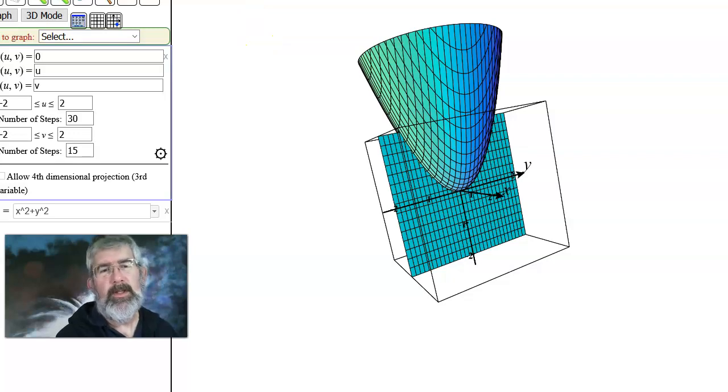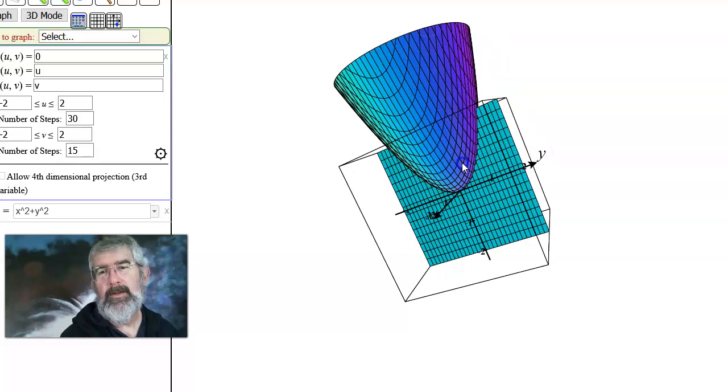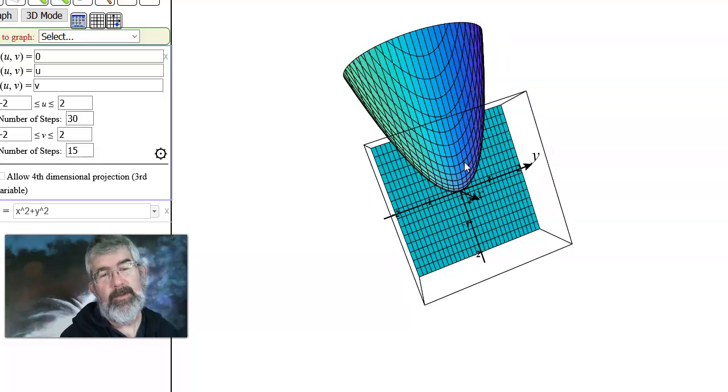Traces. So if you can get an idea what the traces are for different values of x or different values of y, then you can get an idea of perhaps what the graph is. The grid lines on the surfaces that I'm plotting are the traces for different values of x and y.